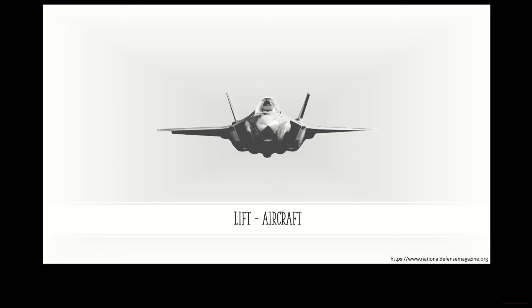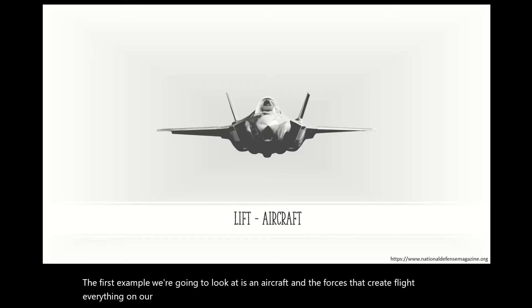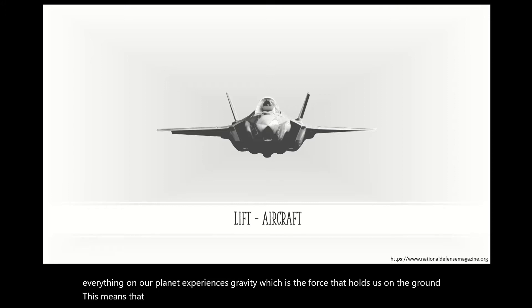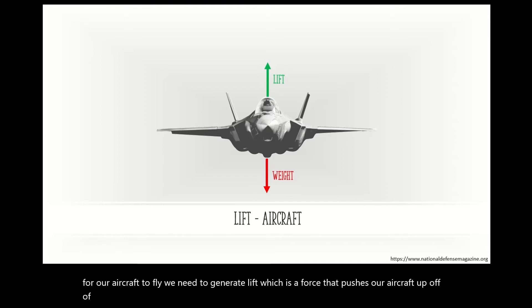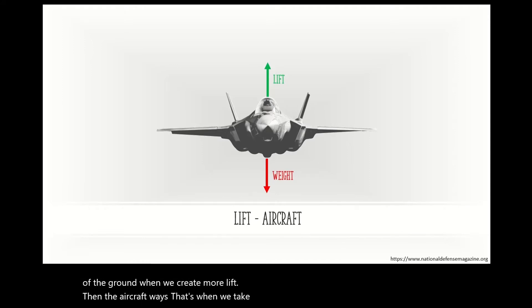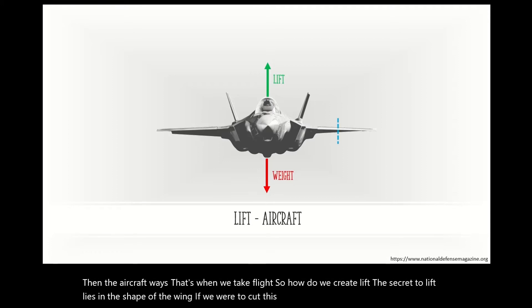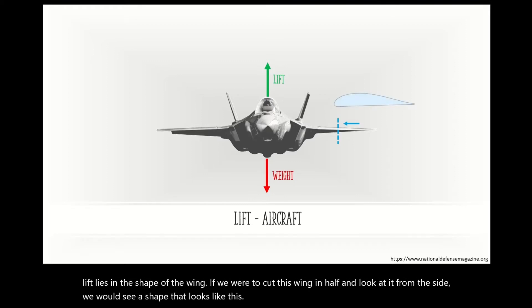The first example we're going to look at is an aircraft and the forces that create flight. Everything on our planet experiences gravity, which is the force that holds us on the ground. This means that every object, including this aircraft, has a weight that keeps it down. In order for our aircraft to fly, we need to generate lift, which is a force that pushes our aircraft up off of the ground. When we create more lift than the aircraft weighs, that's when we take flight. So how do we create lift? The secret to lift lies in the shape of the wing. If we were to cut this wing in half and look at it from the side, we would see a shape that looks like this — it's called an airfoil.